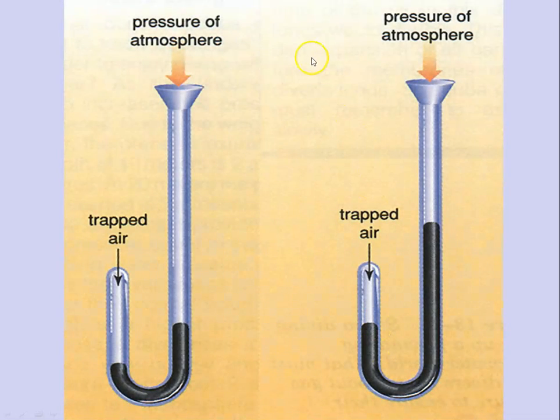So here is a J-tube and this dark stuff here is your mercury, which is a liquid, and he has trapped air here. He found that if he increased the pressure, the volume on the gas decreased, and if you decrease the pressure, the volume increased. So he played around with what happens as you increase and decrease the pressure.